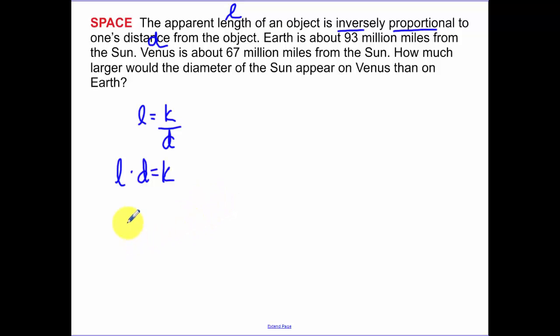Earth is about 93 million miles from the Sun. So the distance of our Earth is 93. The distance of Venus is 67. How much larger would the diameter of the Sun appear on Venus than on Earth? So we know that the length of the Earth times the Earth's distance, which is 93, using this equation here. Since they're in the same proportion, the same constant of proportionality, I can set these two equal as 67 over the length of our object on Venus.